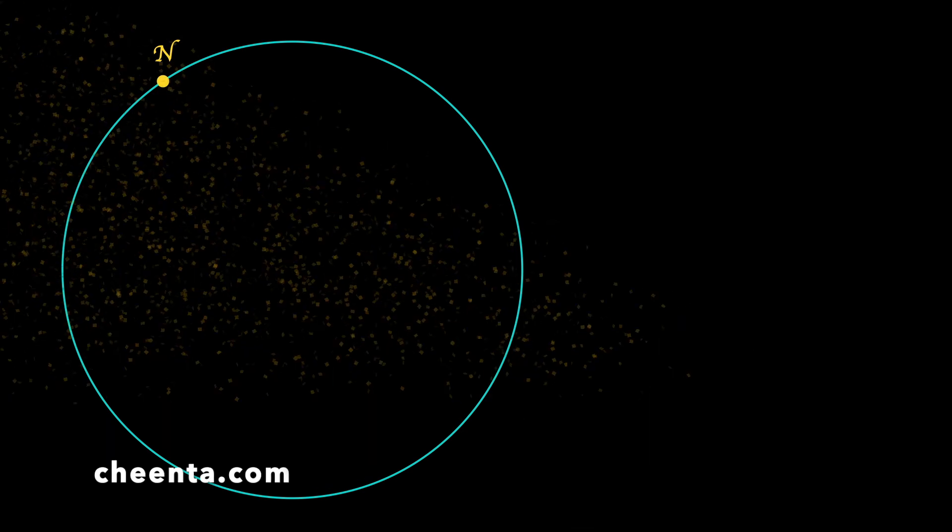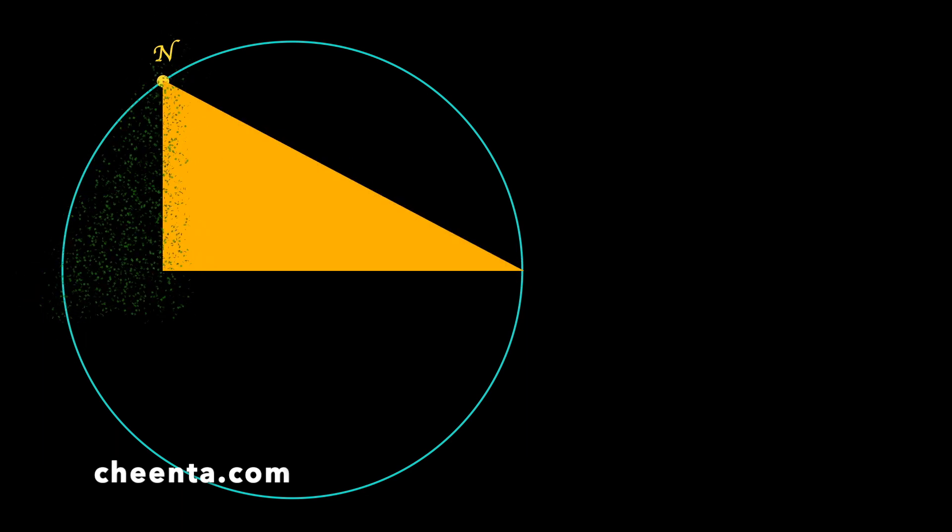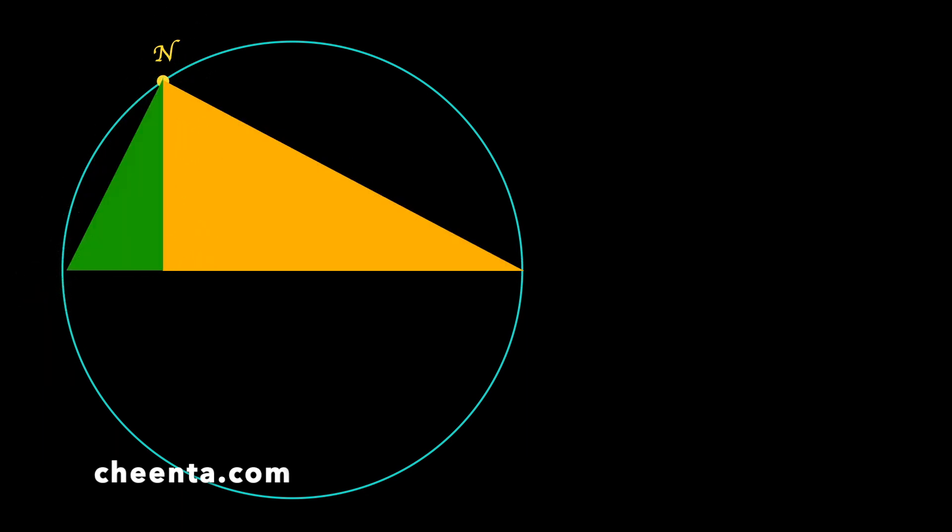Let's come back to the problem one more time. So we have this circle. Let me remind you. And we have a point N on the circumference. We had two triangles, one yellow triangle and one green triangle. The yellow triangle was YMN and the green triangle is XMN. So let's mark the three points which are the endpoints of the triangle: X, M and Y. We wanted to show that XMN and YMN are similar.